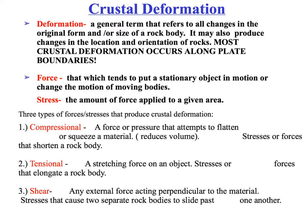The second type is tensional stress, which is the stretching force on an object, and tensional forces are mostly related to divergent plate boundaries. Then there's shear stress, which is basically when two plates or two rock bodies simply slide past each other in opposite directions, and shear forces are typically associated with transform plate boundaries.